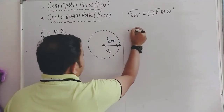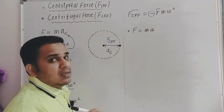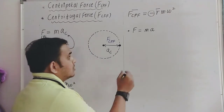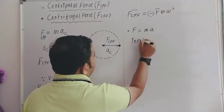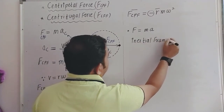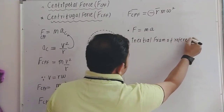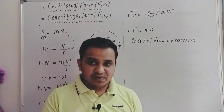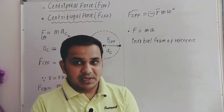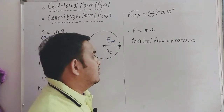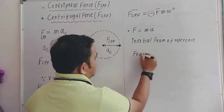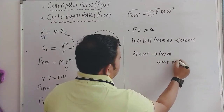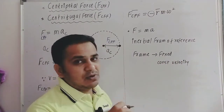The equation F = ma, derived from Newton's second law of motion, can only be applied in an inertial frame of reference. Newton's laws are only valid in an inertial frame of reference. An inertial frame is one which is fixed or has constant velocity.